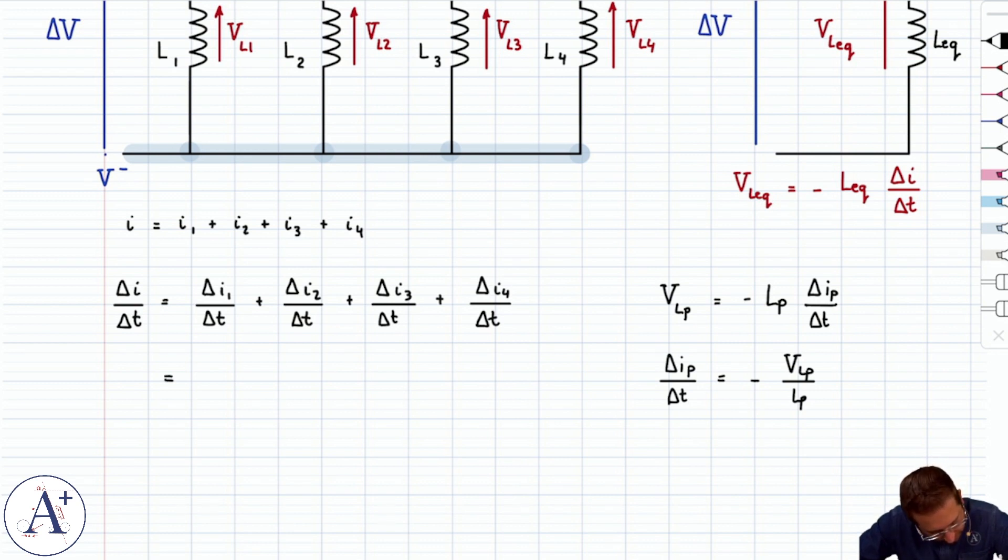We're going to get delta I over delta T is going to be minus VL1 over L1 minus VL2 over L2 and so on and so forth. But because all of these inductors are in parallel, all of the voltages VL1, VL2 and so on are equal to each other, and they're all equal to delta V.